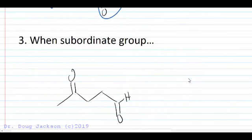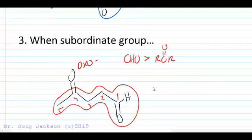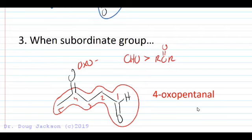Now suppose the ketone is a subordinate group. The aldehyde is a higher priority group on our table. Okay, so we're going to use that as the parent chain. It gets the lower number as well. We name it as an oxo group, so this would be, no stereochemistry needed, a 4-oxopentanal. No number needed for the aldehyde because it's automatically the first carbon of its parent chain.